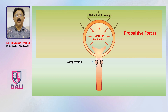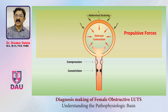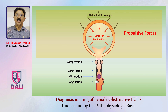In the outlet, you can have a disease creating compression on the urethra, or a disease creating constriction in the urethra, or a disease creating obturation of the urethral lumen — blocking it from within — or a disease angulating or kinking the urethra. These are four mechanisms by which the urethral tube in a female can get obstructed.